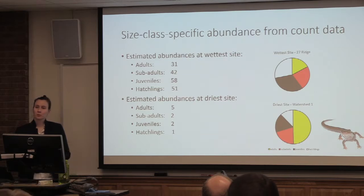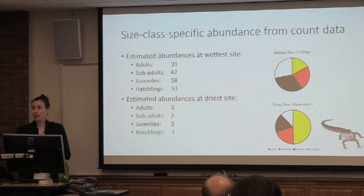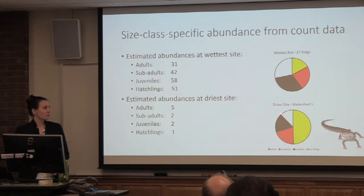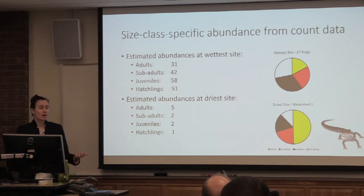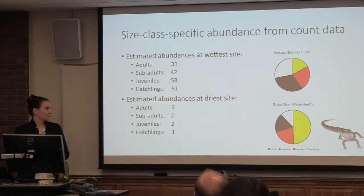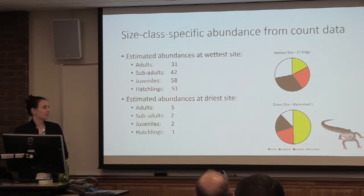That confirms what's been reported in the literature by people who have looked at population structure at dry places for salamanders — adults can handle these difficult environments, but the small animals, because of their high surface area-to-volume ratio, dehydrate rapidly and die. They just can't handle it. So it was really cool to see that show up in these abundance estimates — that same kind of breakdown among size classes.